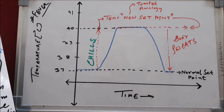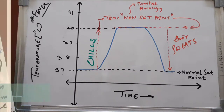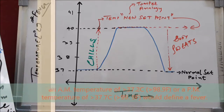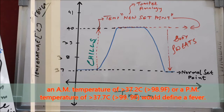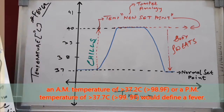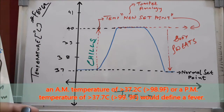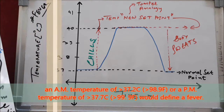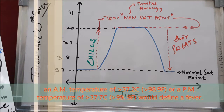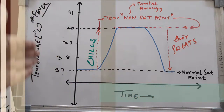Let us start with the definition of fever. According to the definition, a rise in AM temperature of more than 37.2 degrees Celsius, and in PM (evening) temperature more than 37.7 degrees Celsius, is defined as fever.